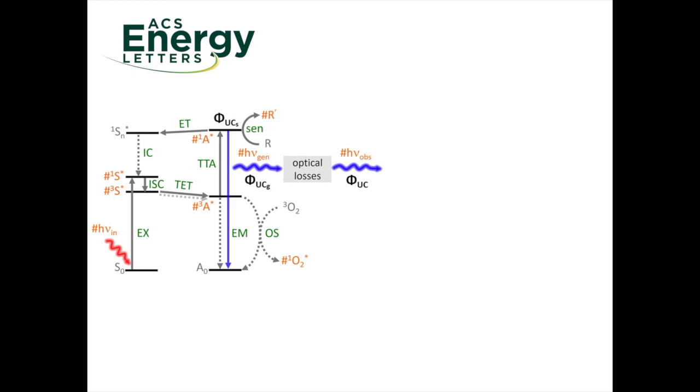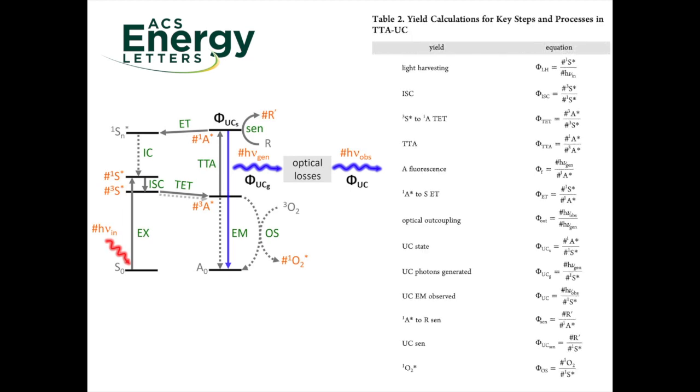The general acceptance mechanism for TTA-UC using a molecular sensitizer and annihilator pair is presented here in Figure 1, and the quantum yield of any single or multi-step process can be defined here in Table 2. I would like to highlight the differences between phiUC, phiUCG, and phiUCS.